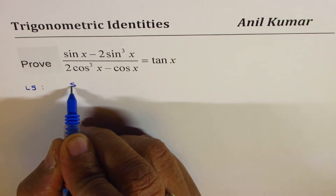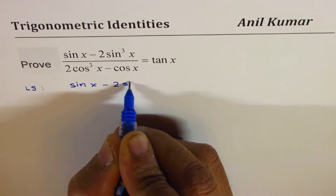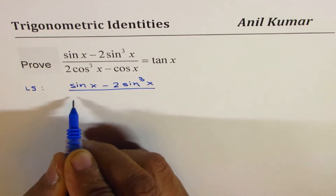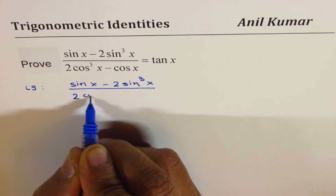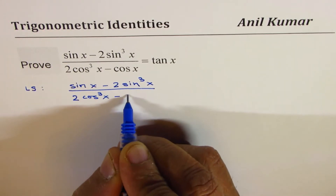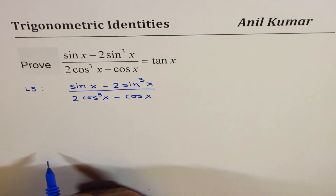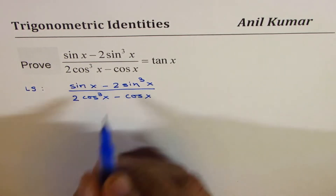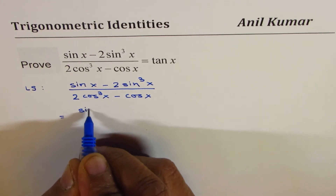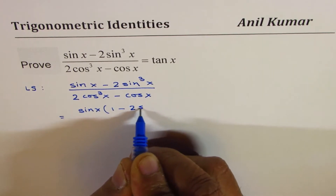The left side can be written as sine x minus 2 sine cube x. You can pause the video, solve the question, and then look into my solution. We can factor out sine from the numerator, so we could write the left side as sine x times 1 minus 2 sine square x.